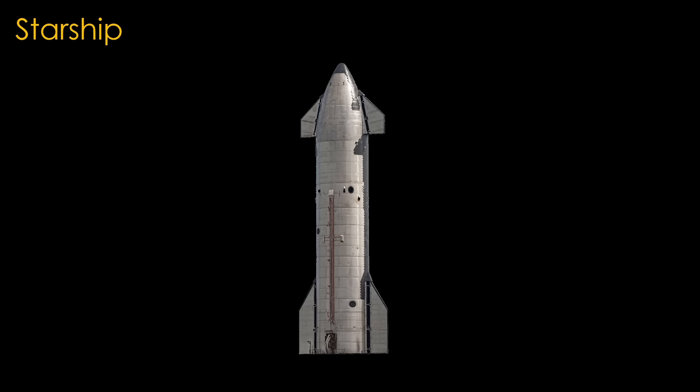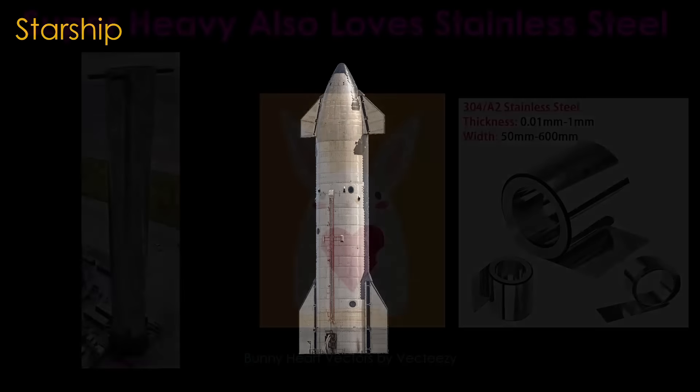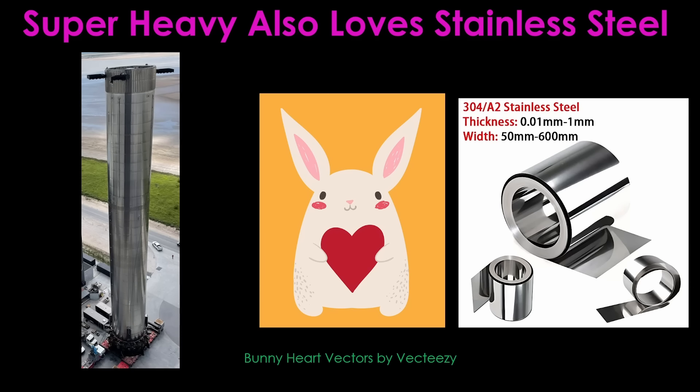Stainless is a great material for Starship. It's heavier than the other options, but none of the other materials have the combination of high heat performance, ease of construction, and low cost. But Super Heavy also loves stainless steel.